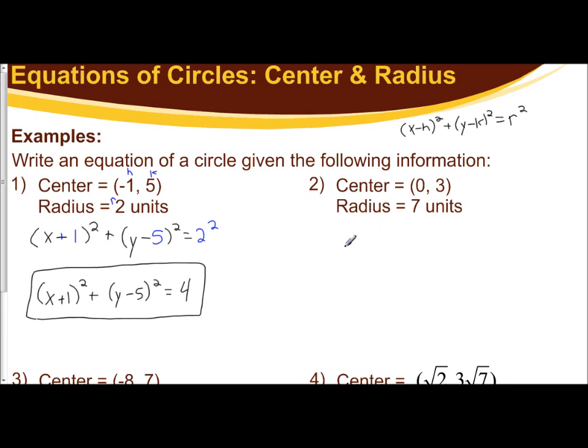We can do the same thing here. We're going to have x minus our h value, which here, h is 0. So x minus 0 squared, plus our y minus our k value squared. And here, our k is 3. So I have y minus 3, equals my radius squared. So that equals 7 squared.